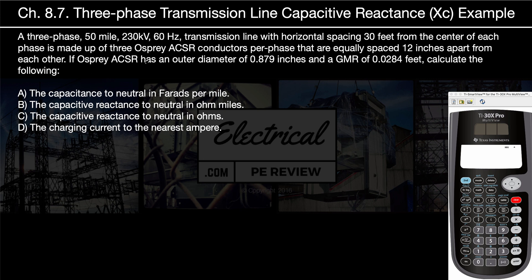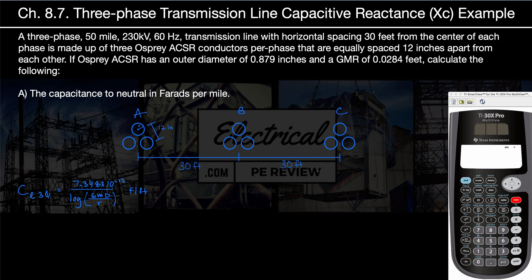This is a lot of information given in the problem. Let's put all these values into a diagram and start by solving for A, the capacitance to neutral in farads per mile. Our three-phase transmission line has three ACSR Osprey conductors per phase — a three-conductor bundle per phase — for phases A, B, and C. Each conductor is spaced 12 inches apart within the bundle. Each of the three phases A, B, and C are horizontally spaced 30 feet from center, so from B phase to A phase is 30 feet, and from B phase to C phase is 30 feet.